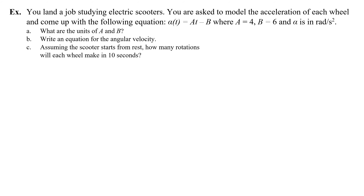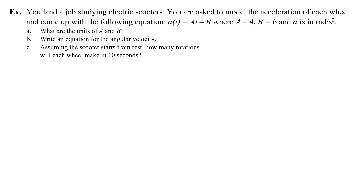Let's do a harder problem. You land a job studying electric scooters. You are asked to model the acceleration of each wheel and come up with the equation alpha equals at minus b, where a is 4, b is 6, and alpha is in radians per second squared. First question: what are the units of a and b?